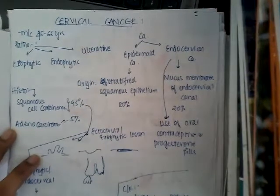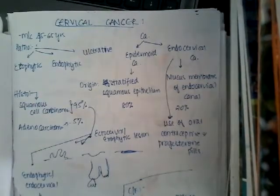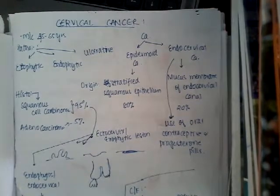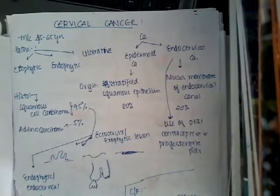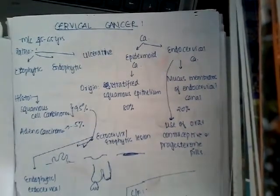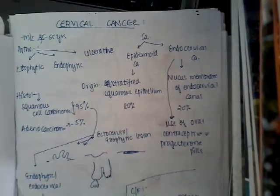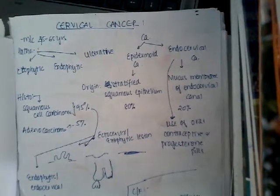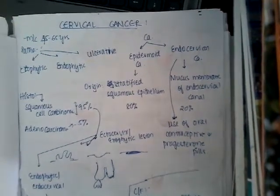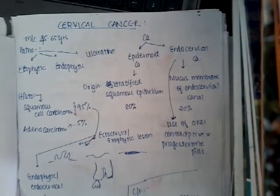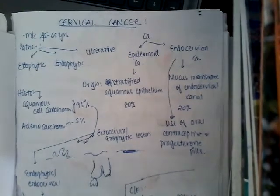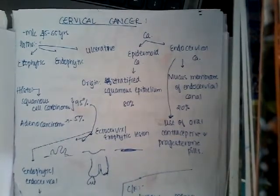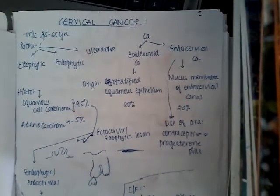Cervical cancer is most common between the age group of 45 to 60 years. Carcinoma in situ is more common in mid-adult age, because once a woman gets carcinoma in situ lesions, those lesions take at least 10 to 15 years to become cervical cancer. So if cervical intraepithelial neoplasia lesions are seen at around 30 to 45 years of age, it takes 10 more years to develop cervical cancer, making the incidence peak at 45 to 65 years.